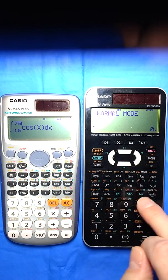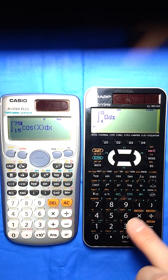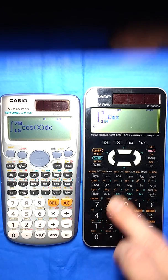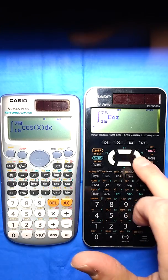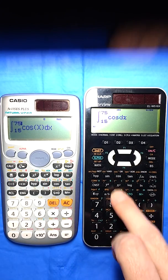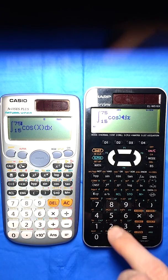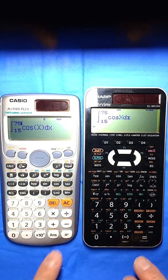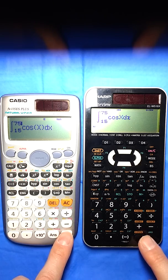And I'm going to do the same over here on the Sharp. I go from 15 to 75. They kind of go in a different order here when you enter the information, but no biggie. Alpha x. Okay, so I want to solve these. I'm going to hit equal at the same time.